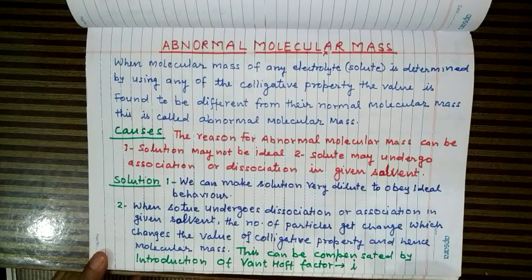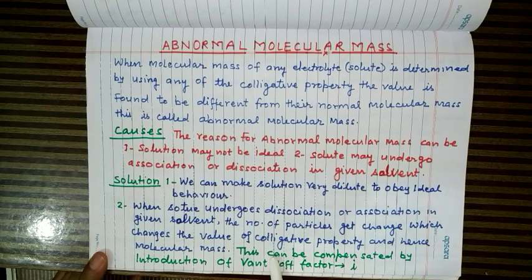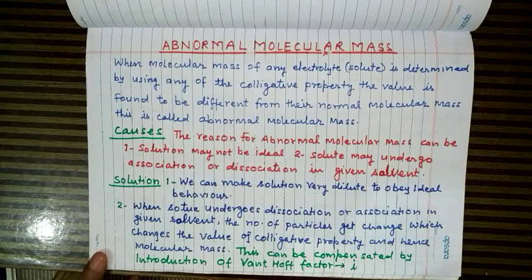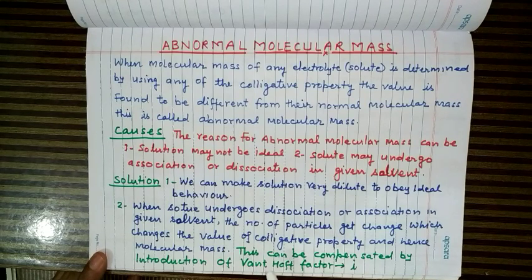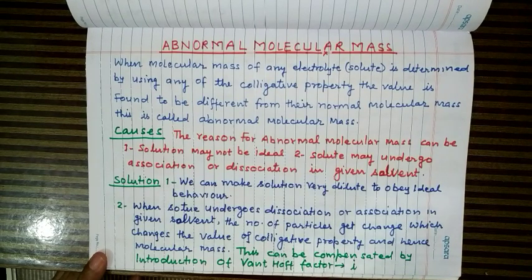The second issue is that when we place an electrolyte solute in a solvent, we cannot prevent it from undergoing dissociation or association — depending on the solvent. If dissociation occurs, the number of particles increases; if association occurs, the number of particles decreases. Since colligative properties depend on the number of particles, their values change, and the determined molecular mass will also be different from the normal value.